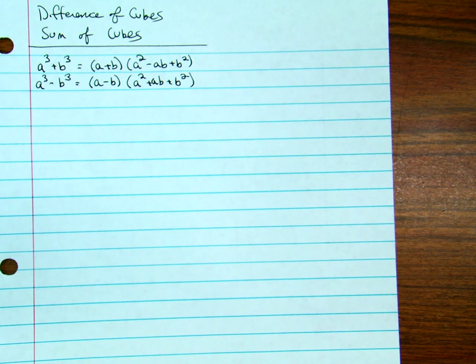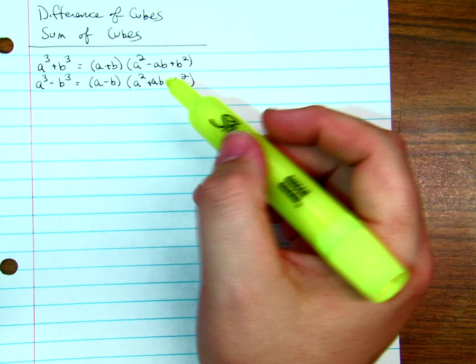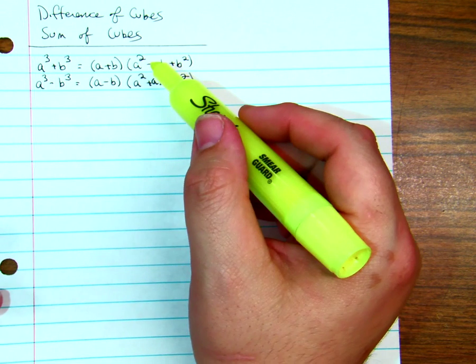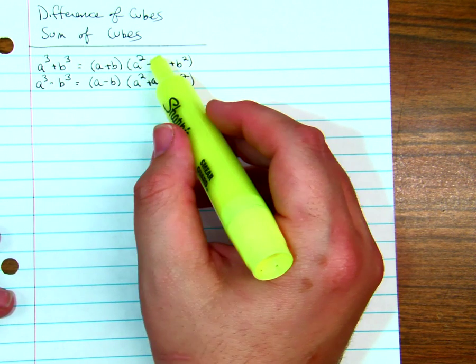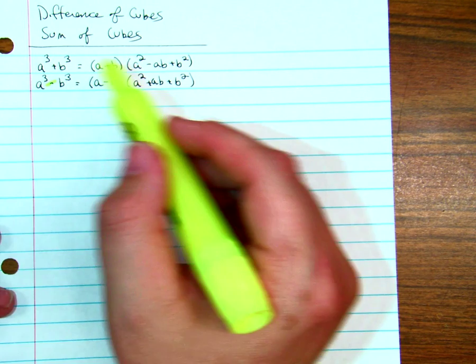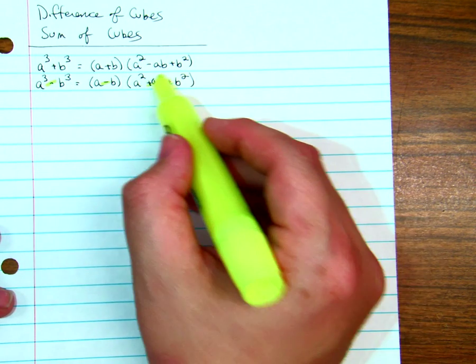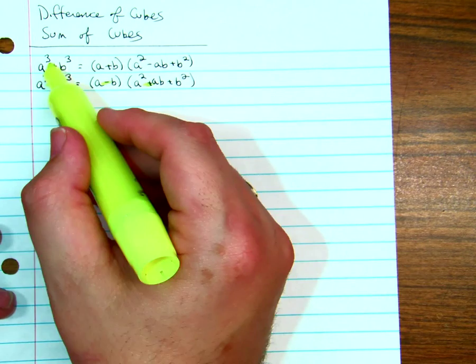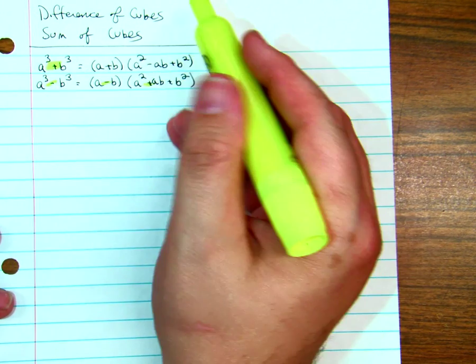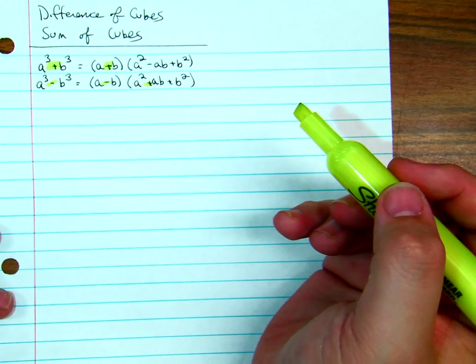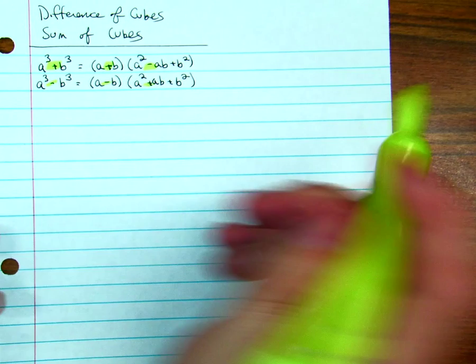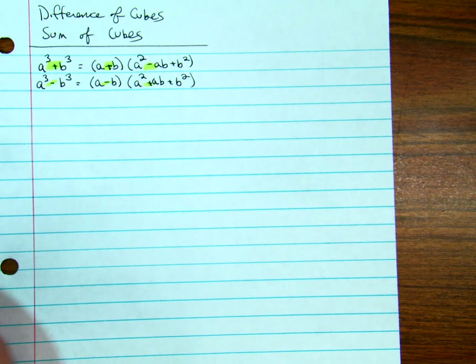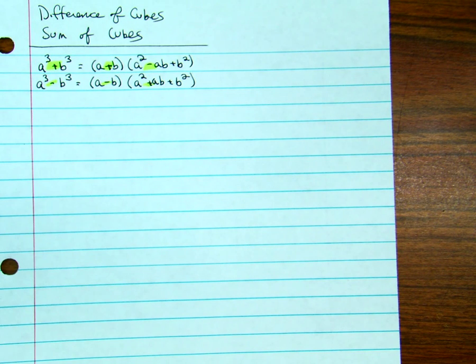Now, one way that I remember this is that it's really close to a squared plus 2ab plus b squared, but you don't have the two in the middle. If it's negative, it starts off negative here, but it changes to positive inside the second part, which is the trinomial. If it starts off positive, the binomial is positive, the trinomial is negative. The middle term is going to be opposite of what the original is going to be.